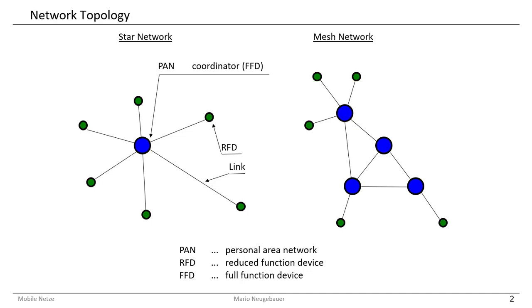If you think about these sensors, you might replace the batteries at most once a year or so, not every week. You want to have these sensors in the field for a long time and don't want to charge the battery often. That is why you have to save energy in these networks, and one way to save energy is to communicate as little as possible — which is only possible if you only have a small amount of data to transfer.